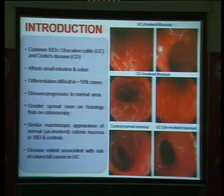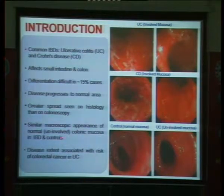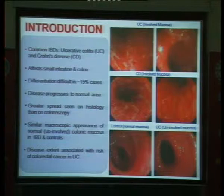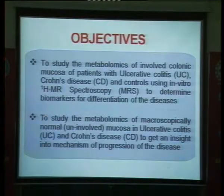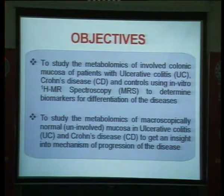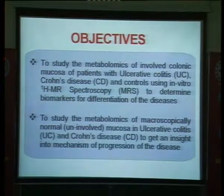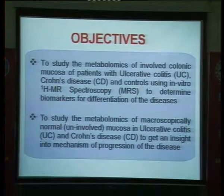There is a similar macroscopic appearance of normal colonic mucosa which is uninvolved in IBD patients and controls. We were interested in finding a method to differentiate between these two diseases and to understand the mechanism of disease progression into the normal area. The objectives were to study the metabolomics of involved colonic mucosa in UC and Crohn's disease using in vitro proton NMR spectroscopy to determine biomarkers for disease differentiation, and also to study the metabolomics of uninvolved colonic mucosa to gain insight into the mechanism of disease progression.